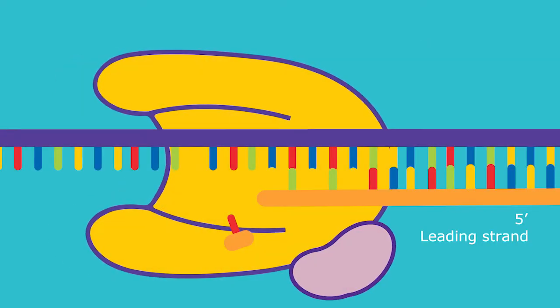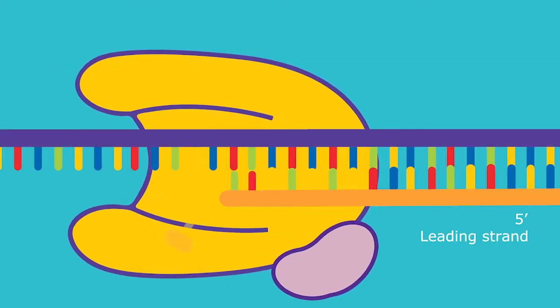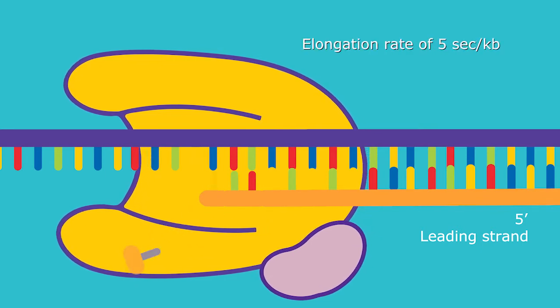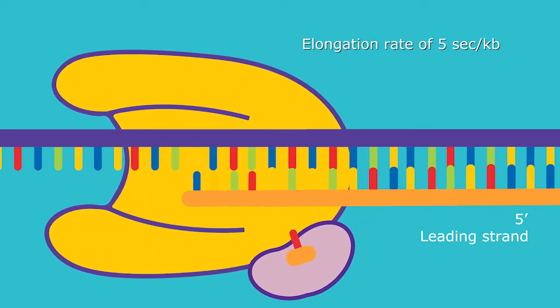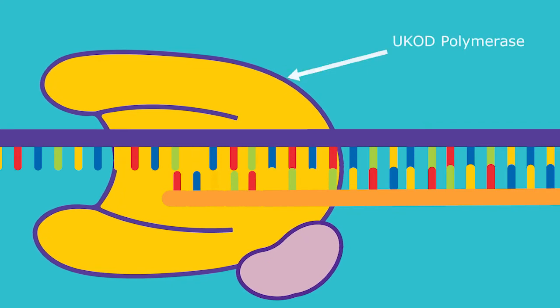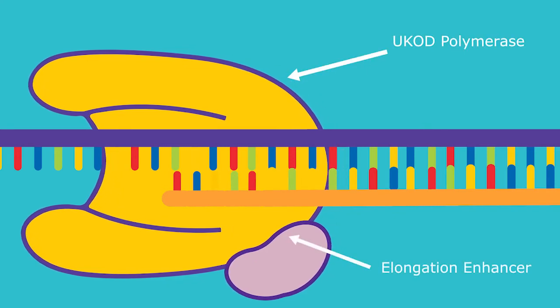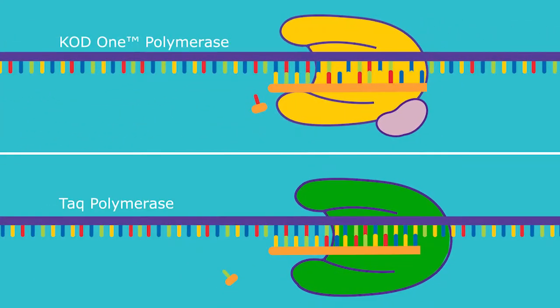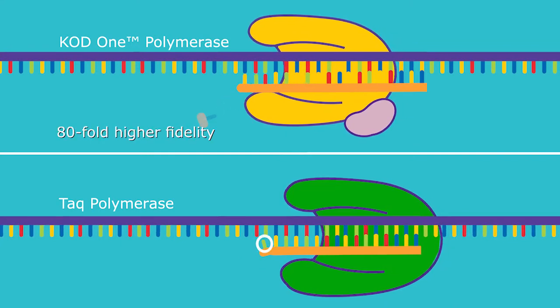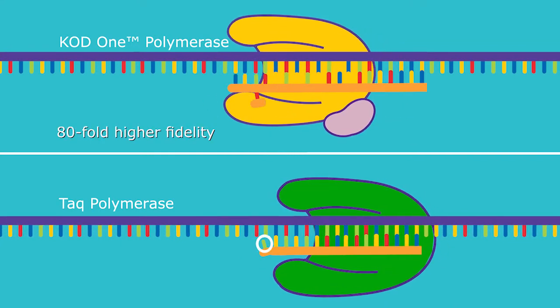The KOD1 polymerase is made of a recombinant DNA polymerase with a significantly faster elongation time of 5 seconds per kilobase because of its unique UKOD polymerase and elongation enhancer. The KOD1 polymerase also exhibits approximately 80-fold higher fidelity than TAC DNA polymerase.